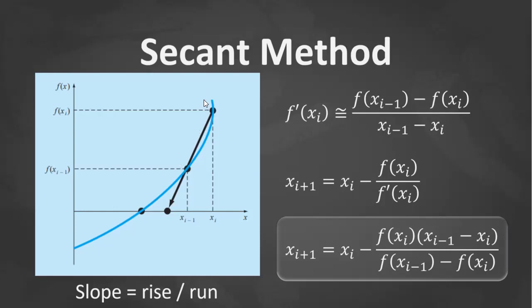These are projected down to the x-axis, and the corresponding point that crosses the x-axis becomes the new root estimate, xi plus 1.